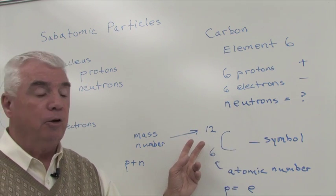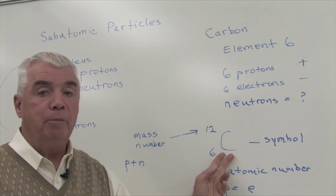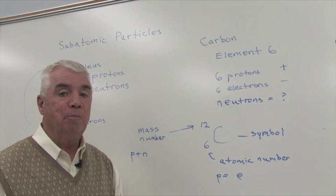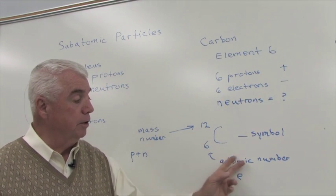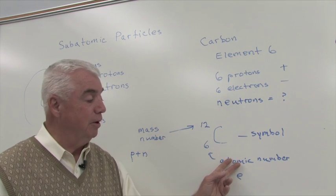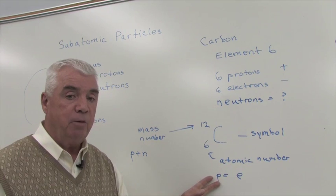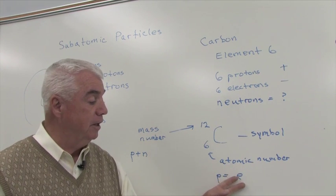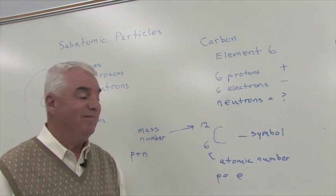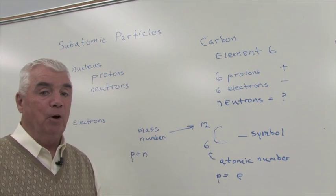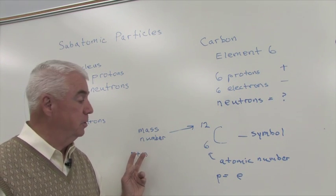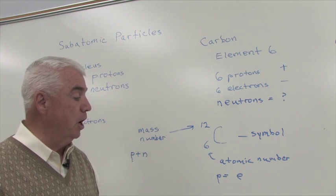And here I've given some additional information. Here's the elemental symbol for carbon, the capital C. This lowercase number is called the atomic number, and we know that it's also the sequence number on the periodic chart of the elements, that it's equal to the number of protons, that it's equal to the number of electrons. This uppercase number is called the mass number because it's the sum of the protons and neutrons, where most of the mass within the atom resides.